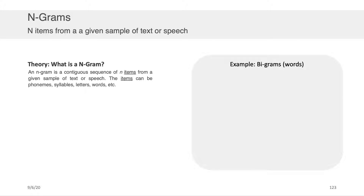These items can be phonemes, symbols, letters, words, whatever. So turning our attention to the right-hand side, the first two words in the paragraph that I just read, 'an n-gram,' are an example of a bigram. 'n-gram is' is another example of a bigram, 'is a' is another example of a bigram, and so on.